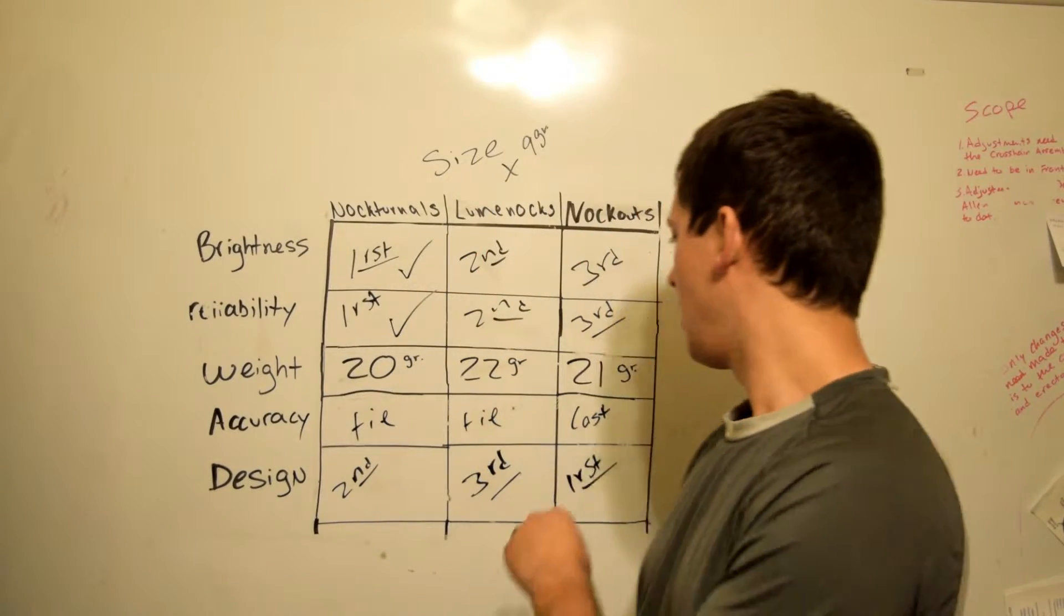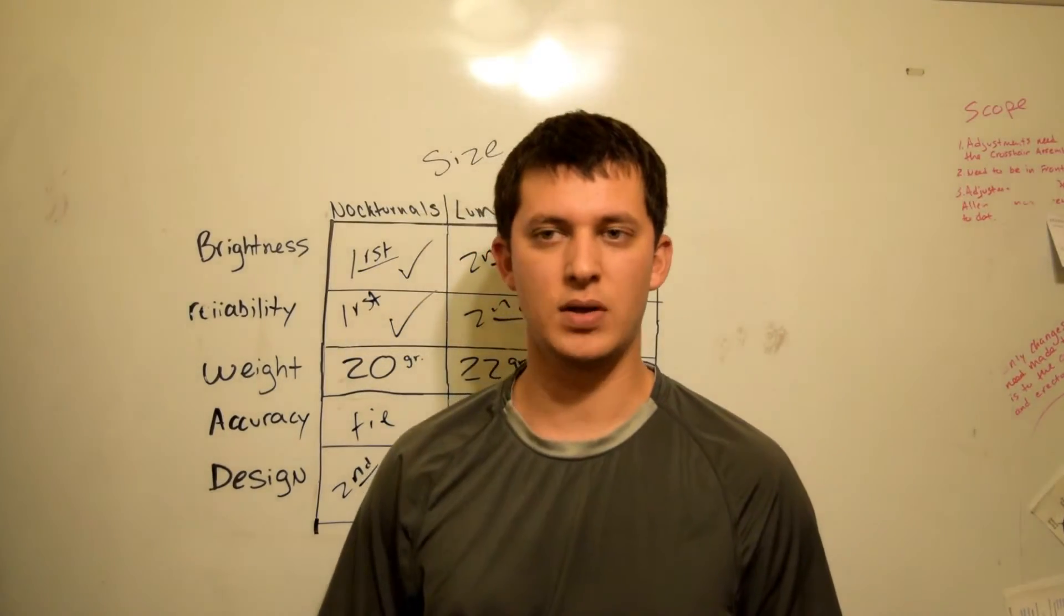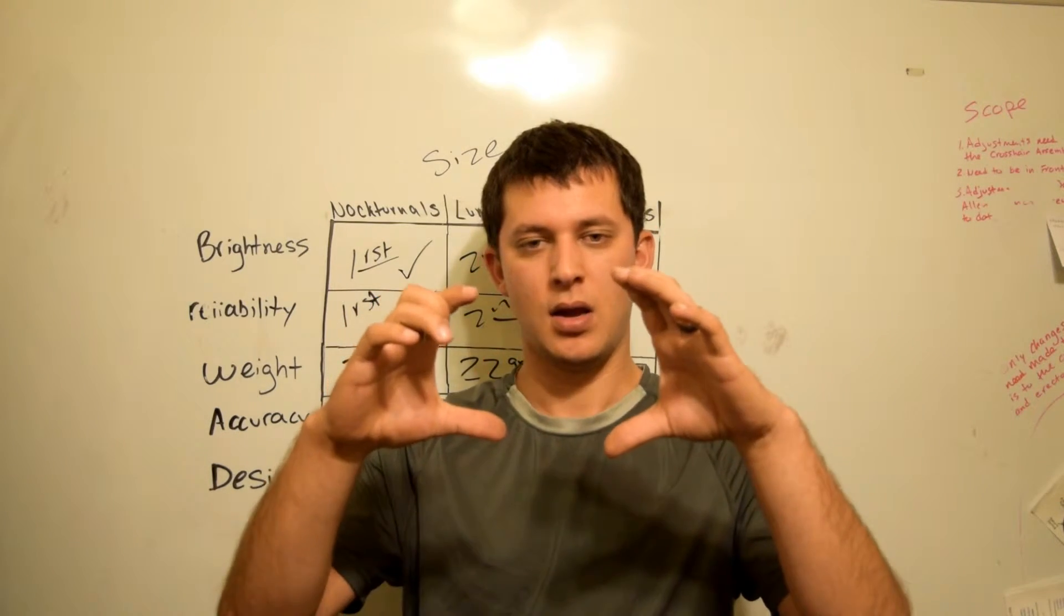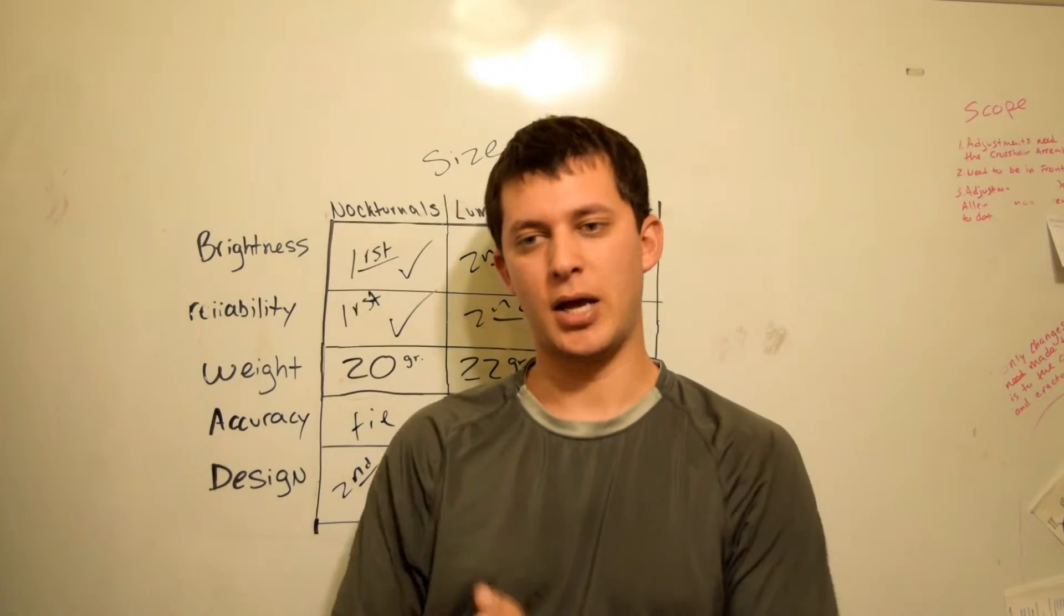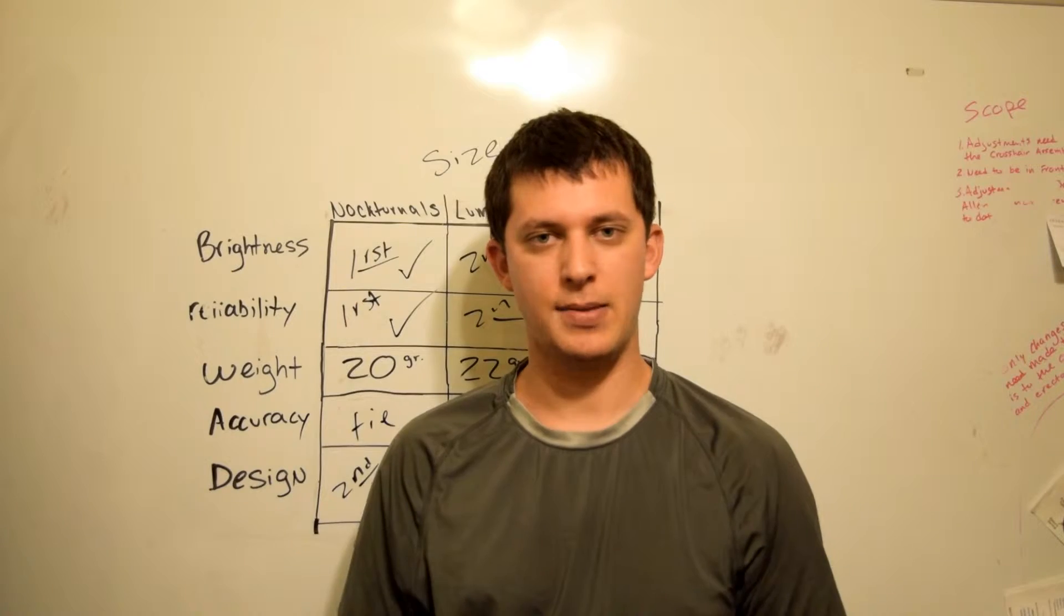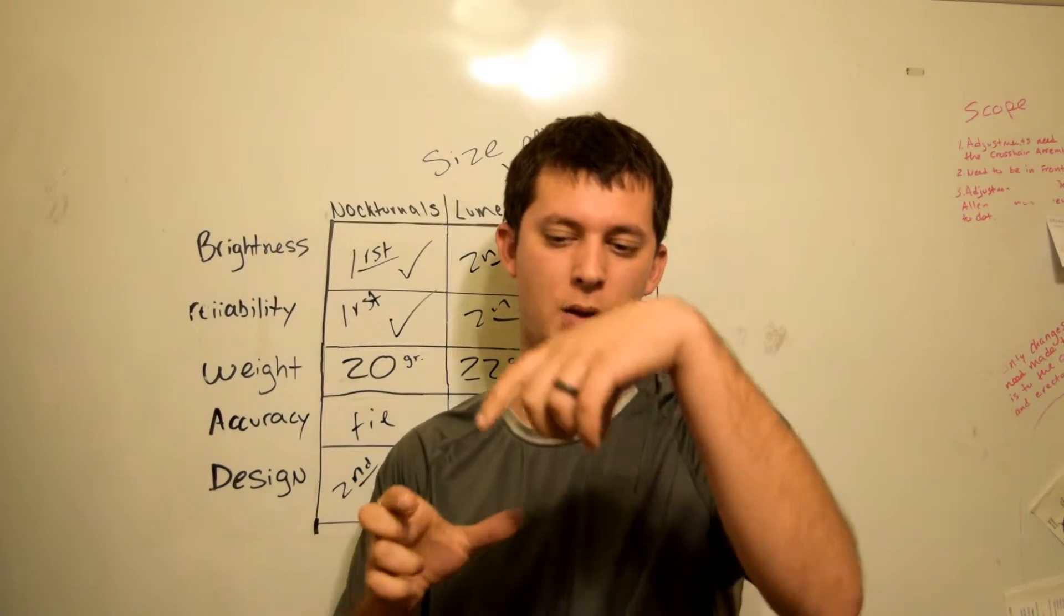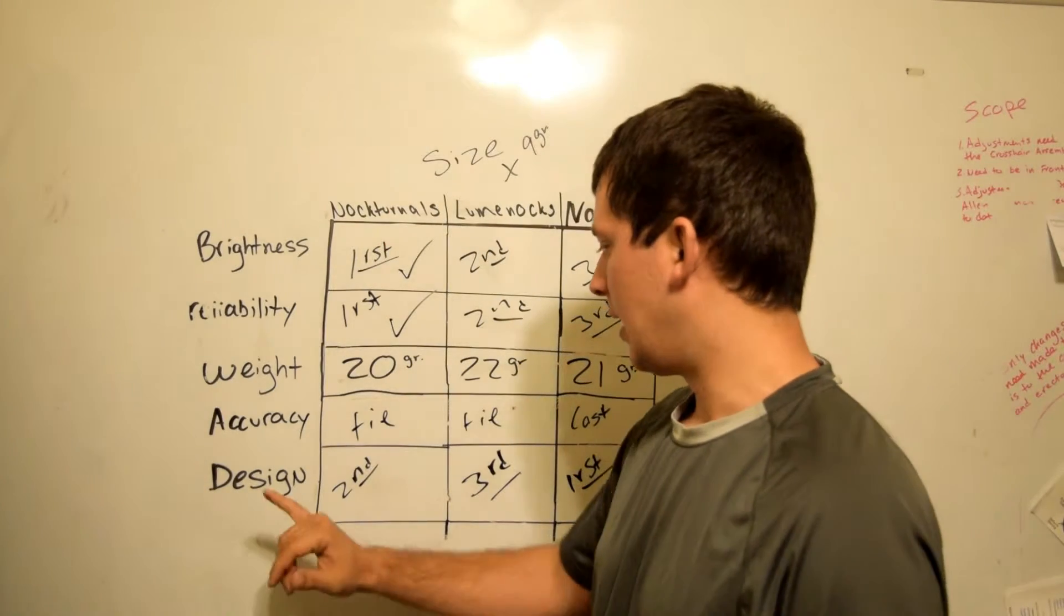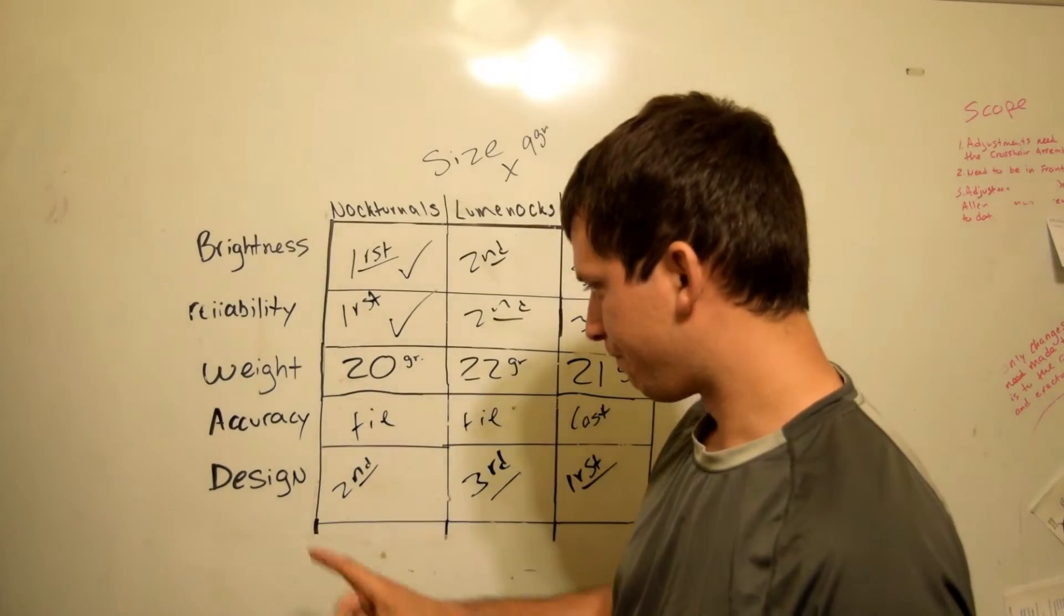Accuracy with this one just wasn't there. I noticed that my groups at 60 yards would actually end up being like that because some of them would drop down a little bit. I thought it might be me. I'd shove a regular knock back in there, shoot, tighten back up. Put the Knockouts back in, they'd open up, and a lot of times there'd be a couple that were low. I didn't like that.